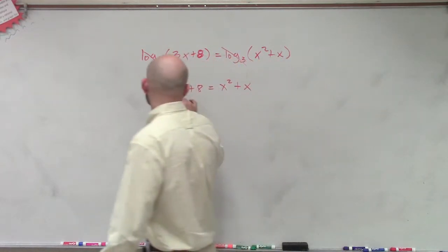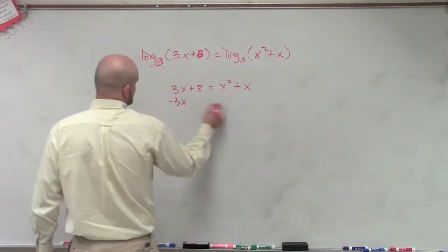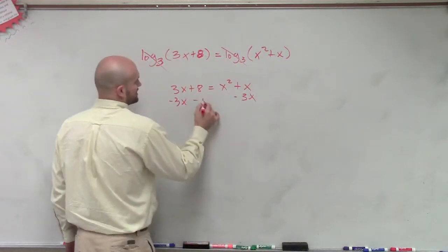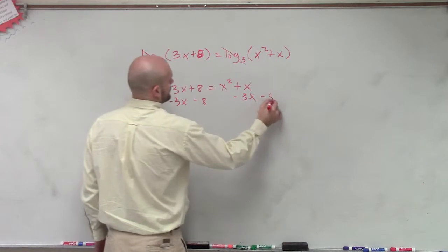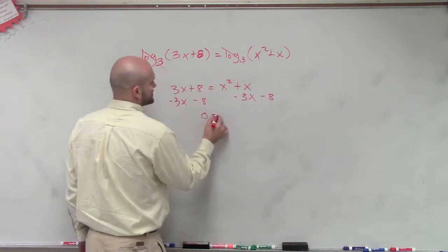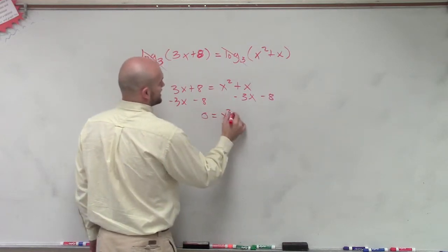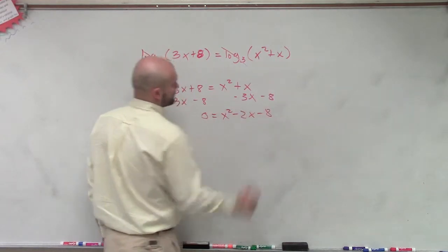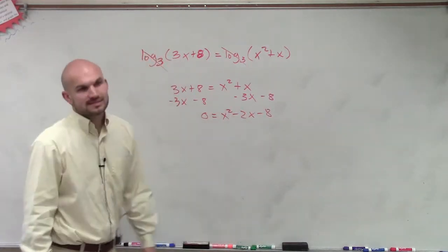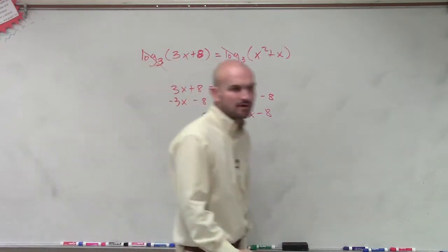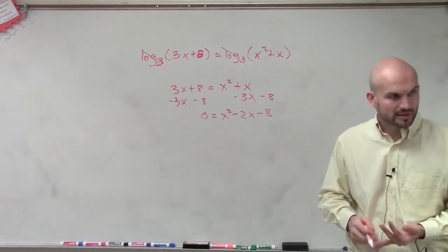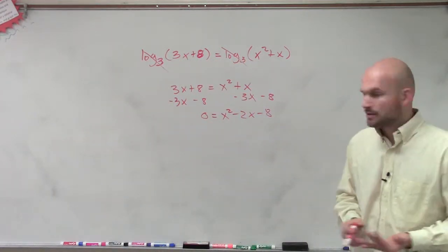So I'll subtract the 3x and I'll subtract the 8. Therefore, I have 0 equals x squared minus 2x minus 8. Now we've got to decide how we're going to solve this — factoring, quadratic formula, or completing the square.